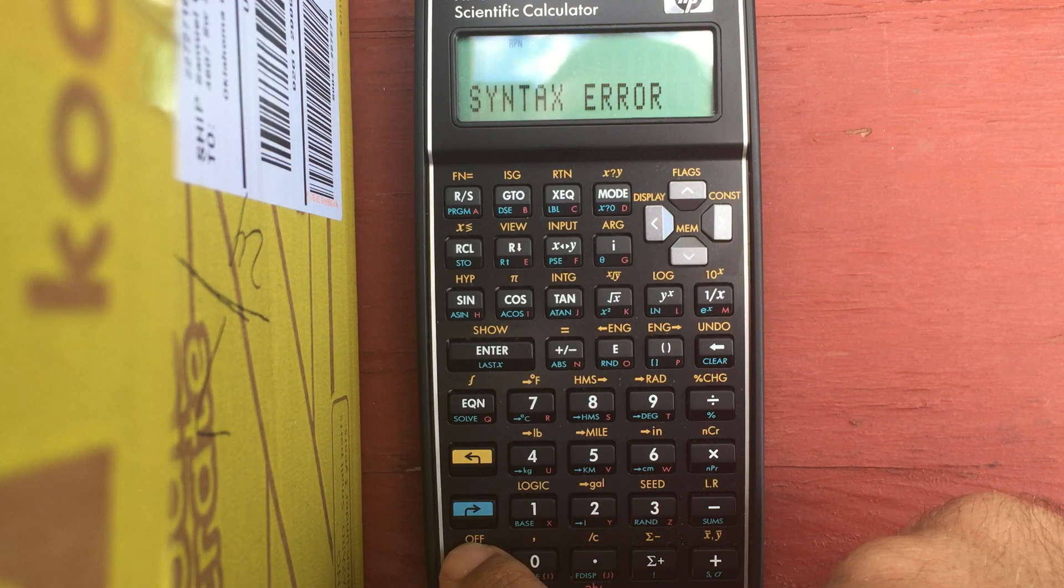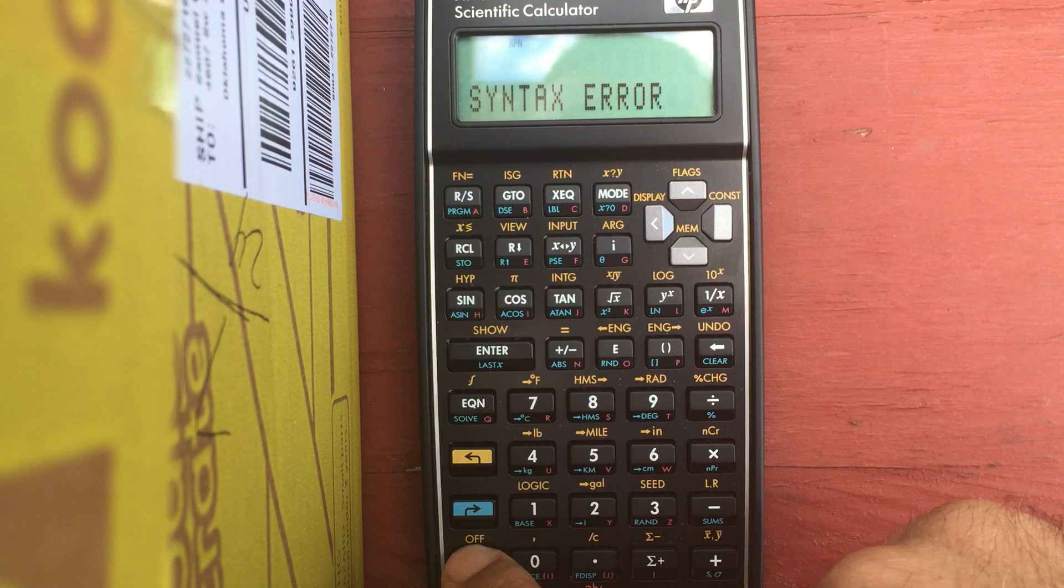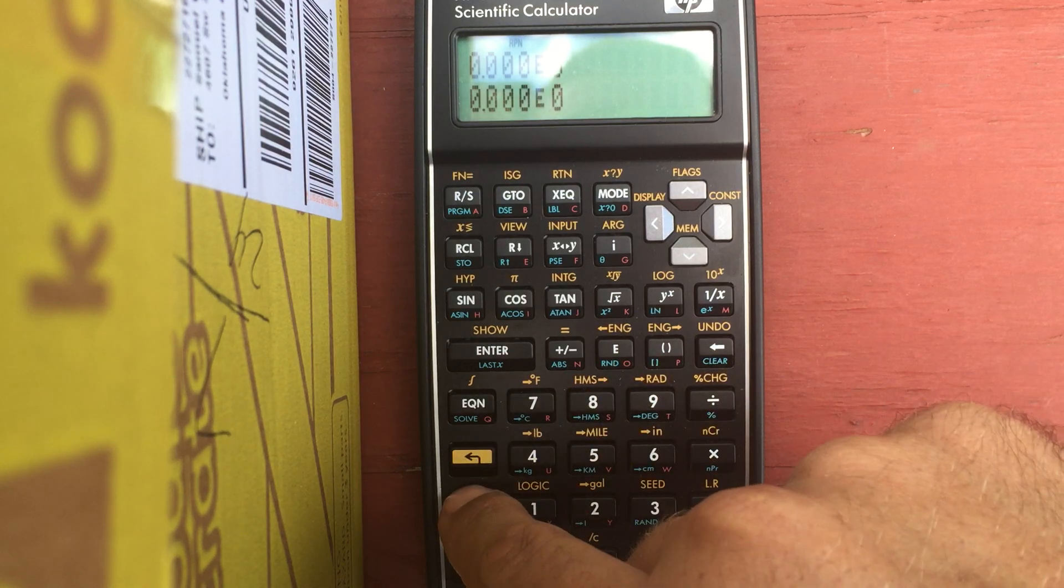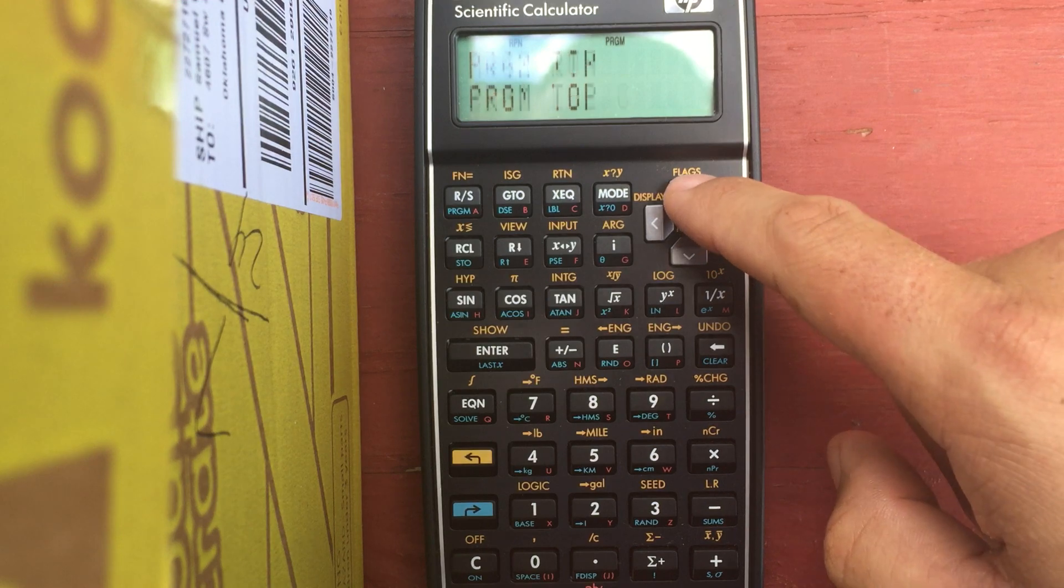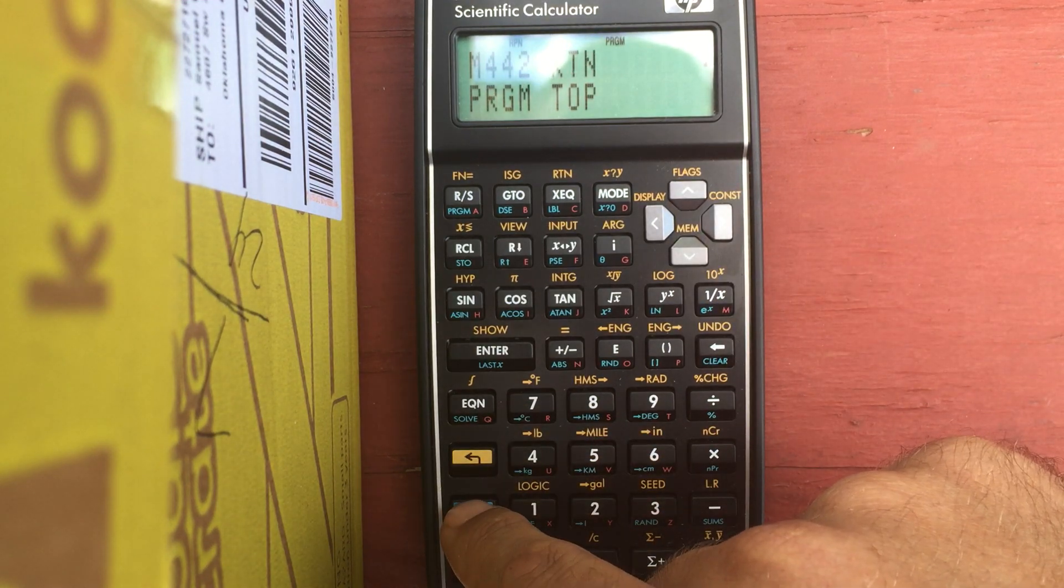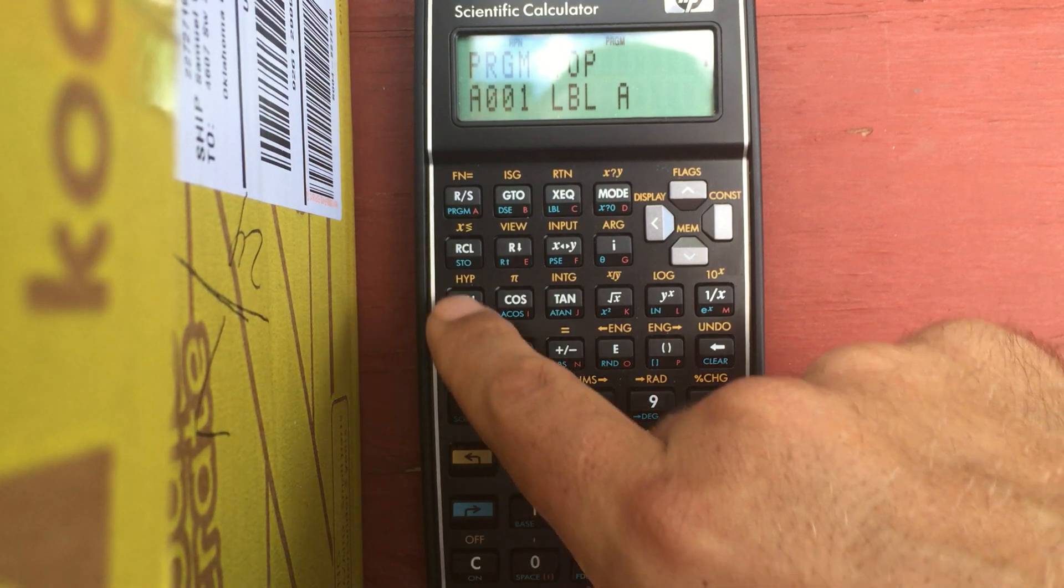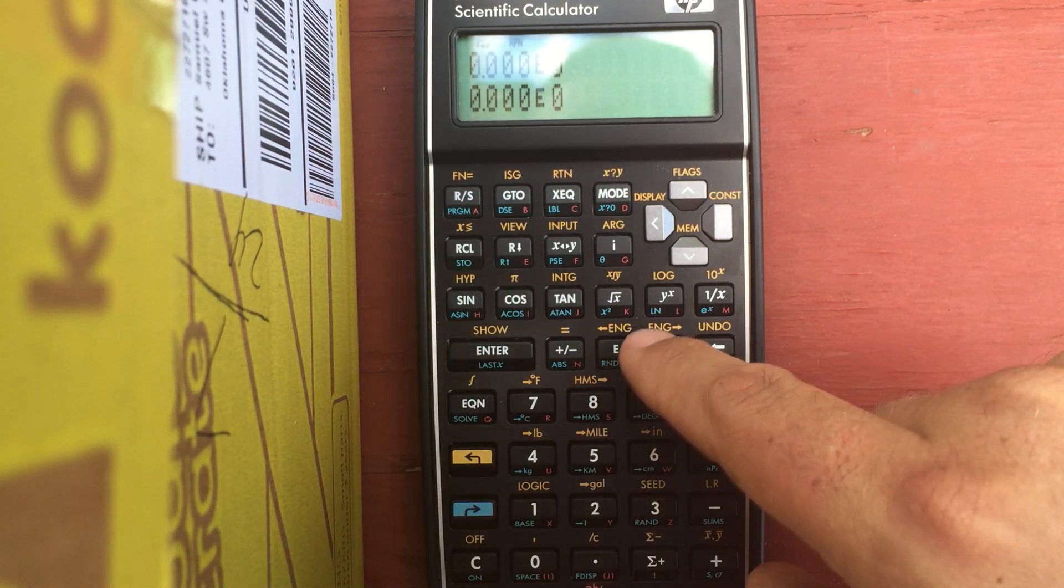So I played around with it, tried clearing variables, tried resetting just about everything except the memory because I didn't want to lose my programs. But I discovered that if I go to programs, start a new label, and then clear out of programs, and now try to enter a vector.